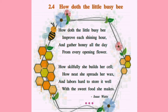Now let us see the first stanza. 'How doth the little busy bee' — they are telling how busy she is. 'Improve each shining hour' means to use time in a proper way, never wasting any time. The bee always utilizes every hour she has. That is why they say she keeps improving each shining hour.